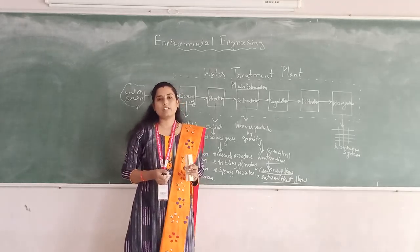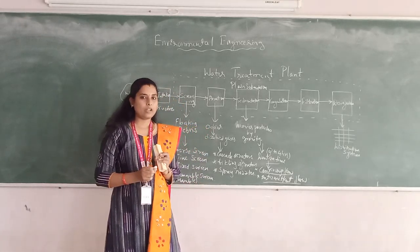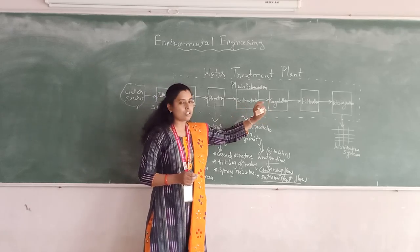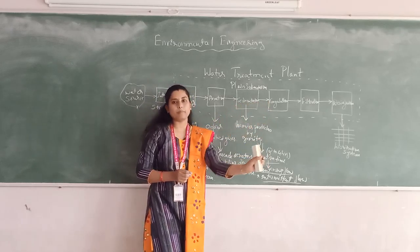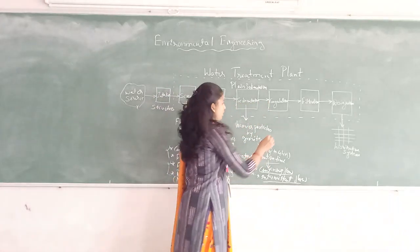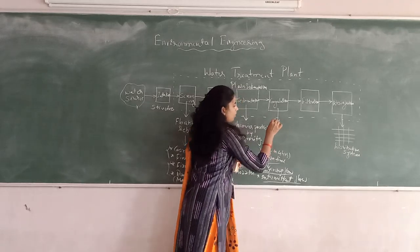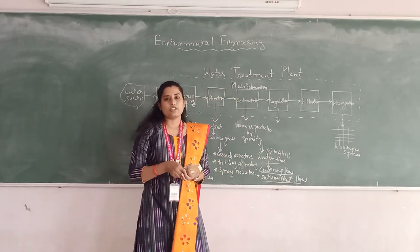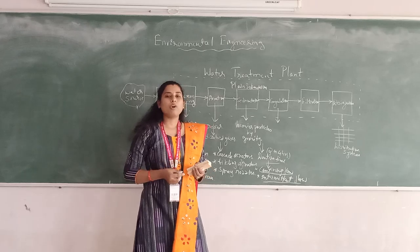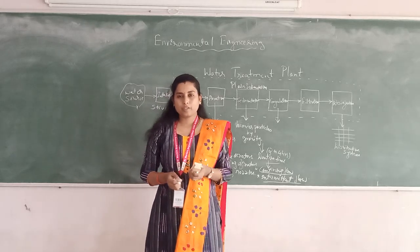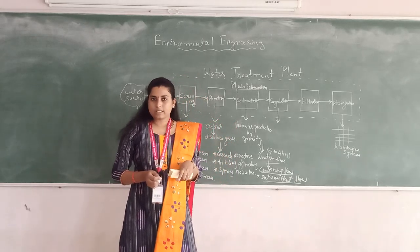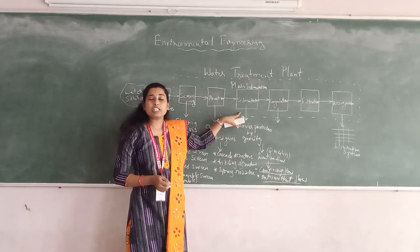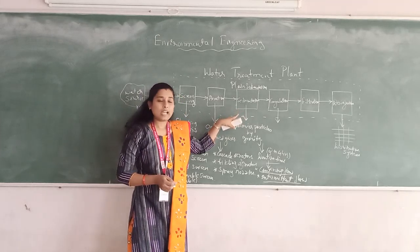These are the two types of settling. Based on shape, we also have the rectangular sedimentation tank and circular sedimentation tank. After the sedimentation tank, the next unit of the treatment plant is coagulation.